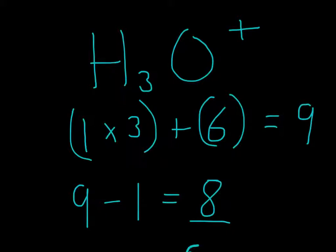But we're not done, because there's a plus charge. A plus charge means it's a cation. A cation means there are fewer electrons than protons. So what we'll do is subtract one electron from the total. 9 minus 1 is equal to 8.